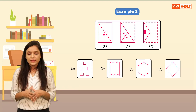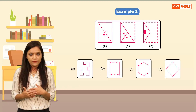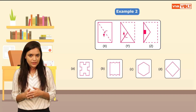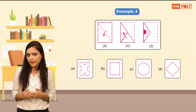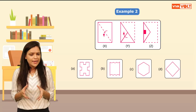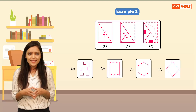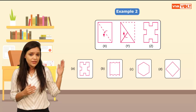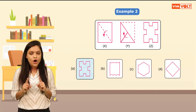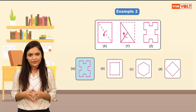This means when we unfold it, there would be a small square cut along each edge of this paper. Now let's unfold it. Do you see any such figure in the options? Yes, option A represents this figure, so it is the correct answer.